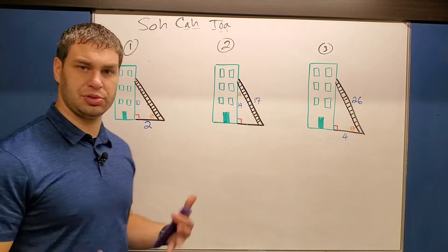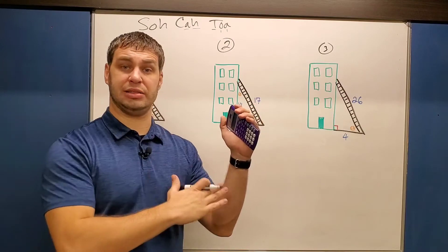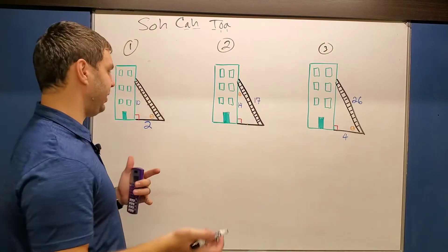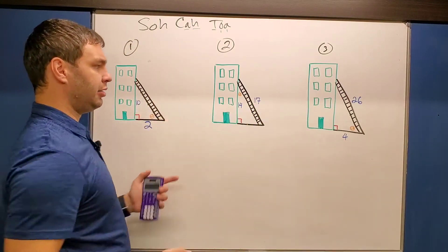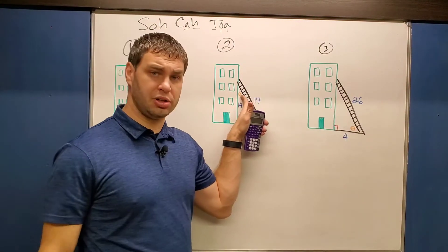Today you probably clicked on this video because you have some sort of math problem that says you have a ladder that's leaning against a wall or a ladder that's leaning against a building. You need to find the angle that's made between the ground and the ladder or maybe the building and the ladder. So we're going to tell you everything you need to know to solve these.